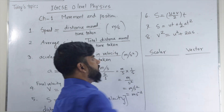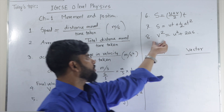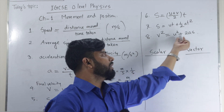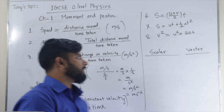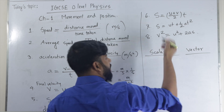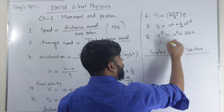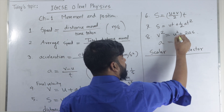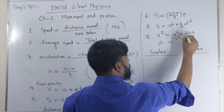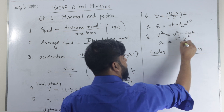Another formula to calculate the final velocity: V squared equals U squared plus 2AS. If we want to calculate acceleration from this formula, we can rearrange it: V squared equals U squared minus 2AS.